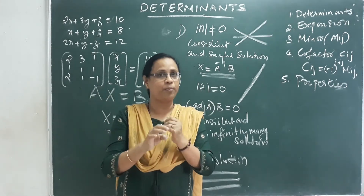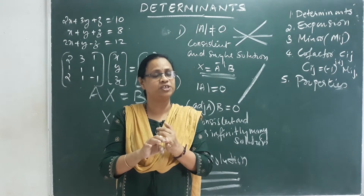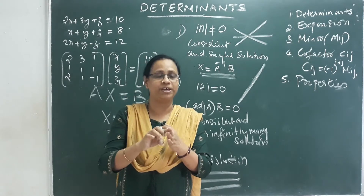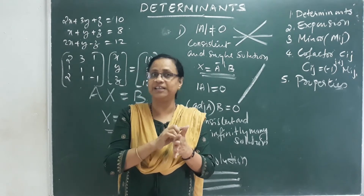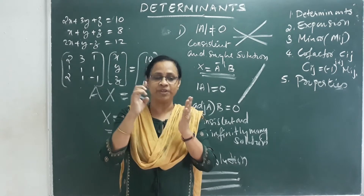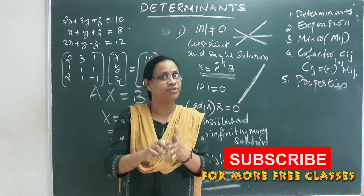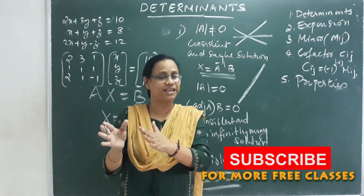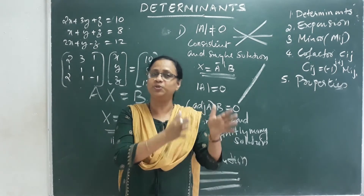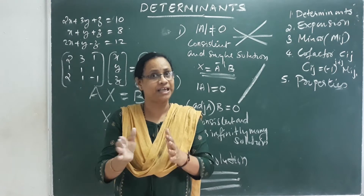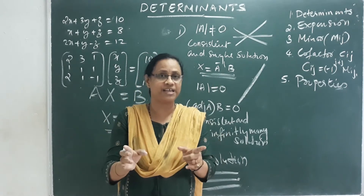The properties of determinants are: the reflection property, switching property, repetition property, scalar multiple property, proportionality property, sum property, invariance property, factor theorem, and the rule that determinant of AB equals determinant A times determinant B. Also, we have the triangular matrix.